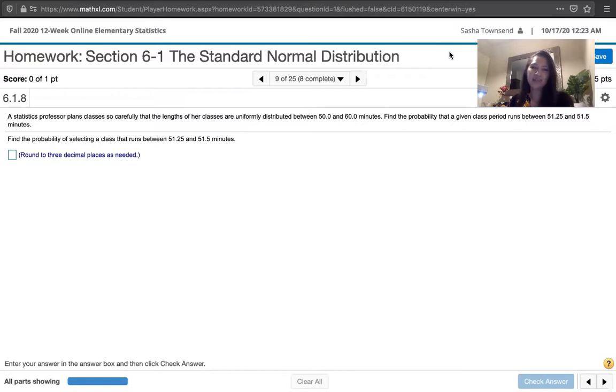So the key words here are that it's uniformly distributed. That's really important. And the lengths of classes are between 50 and 60 minutes. And then we're asked to find the probability that a given class period runs between 51.25 and 51.5 minutes. And over here in the fine print we're asked to round to three decimal places as needed.